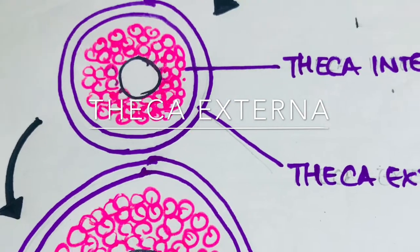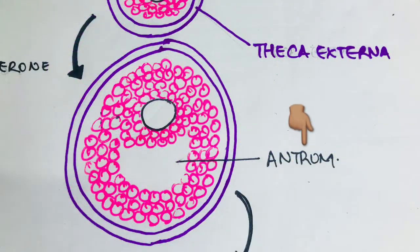Now after a few days of proliferation, the mass of granulosa cells secretes a follicular fluid that contains a high concentration of estrogen. Now accumulation of this fluid causes an antrum to appear within the mass of the granulosa cells.